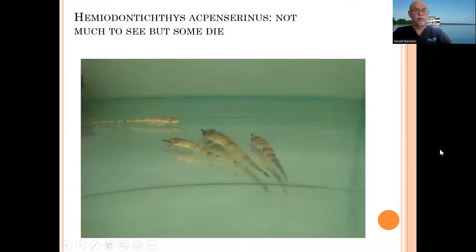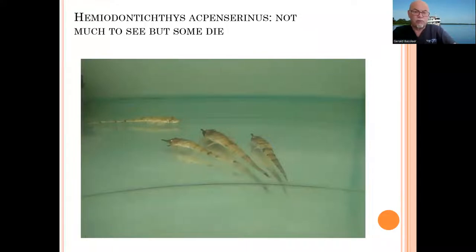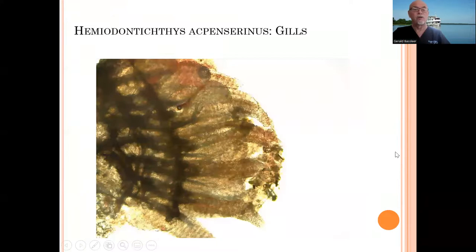These hemiodontichthys — here you can see not much at the fish externally. Some were dying, some were getting skinny, nothing specific we could really notice on the outside, but they were not looking perfectly. They hardly moved. This is the kind of fish — it's a whiptail fish, which belongs to the Loricariidae, which is a very specific group.